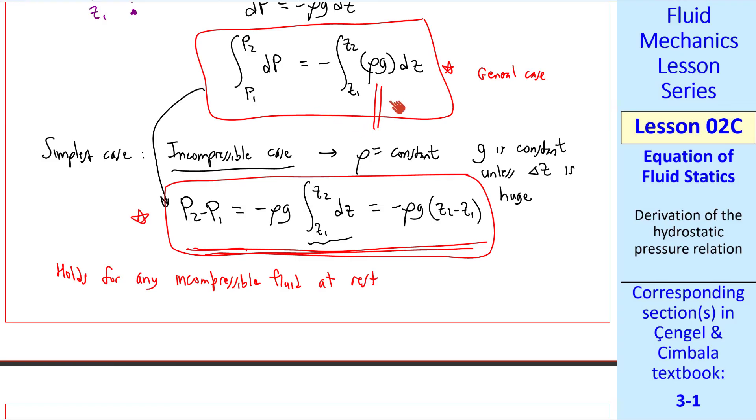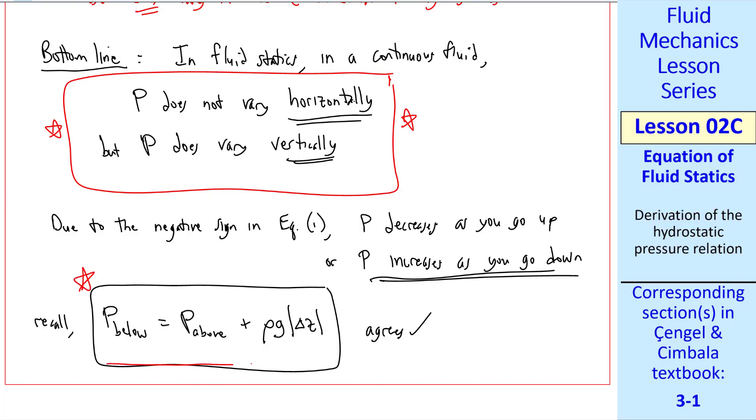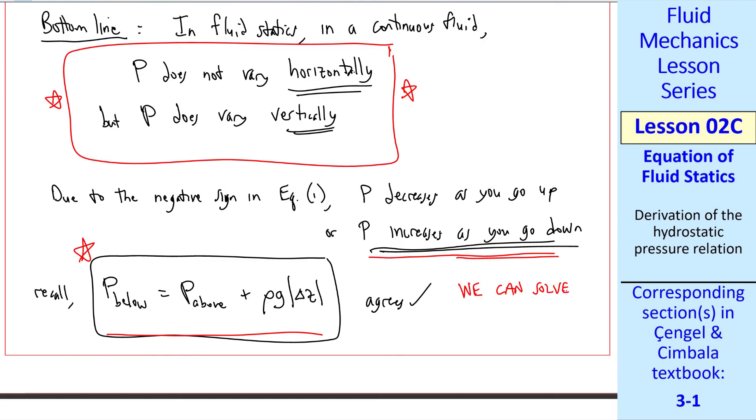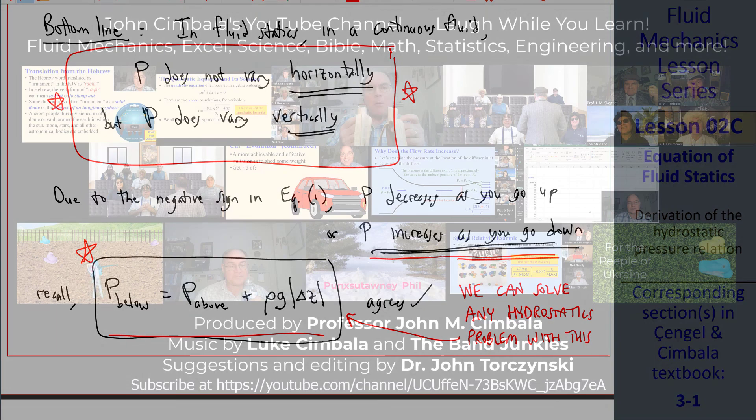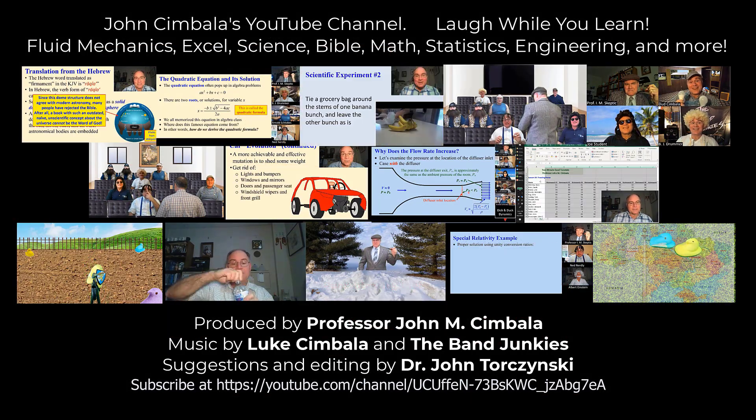Keep in mind, if you're doing homework problems, for example, if density is not a constant, you must integrate. We can rewrite this as our simple equation from previously. Namely, without worrying about the negative signs, we just rewrite this as p below equal p above plus rho g delta z. I like this form because you never get confused with negative signs. And it clearly shows that p increases with depth. I'll end by saying this. We can solve any hydrostatics problem with this equation. Thank you for watching this video. Please subscribe to my YouTube channel for more videos.